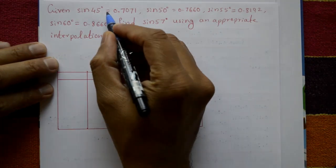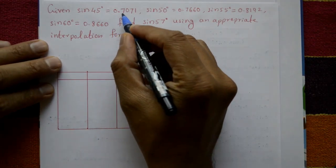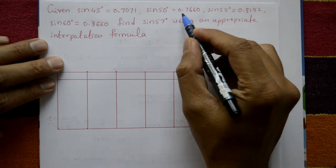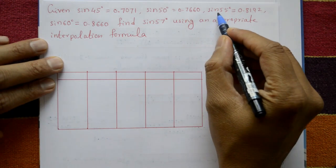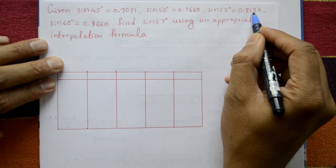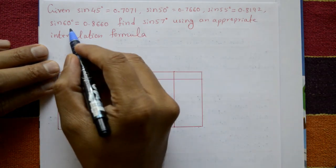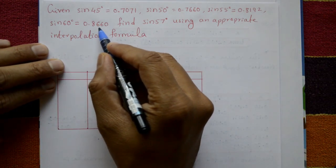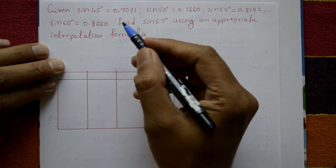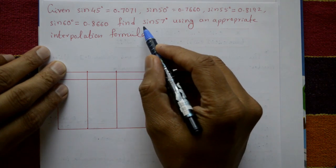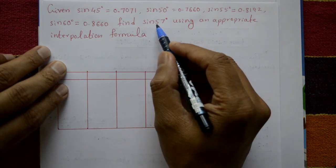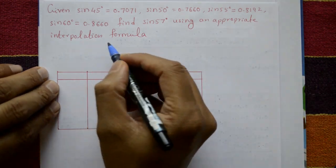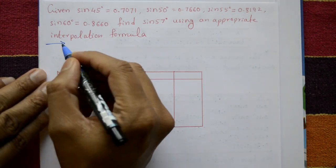Given sin 45° = 0.7071, sin 50° = 0.7660, sin 55° = 0.8192, sin 60° = 0.8660, find sin 57° using an appropriate interpolation formula.